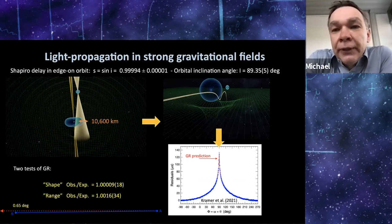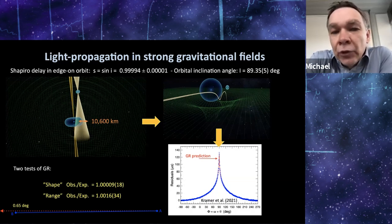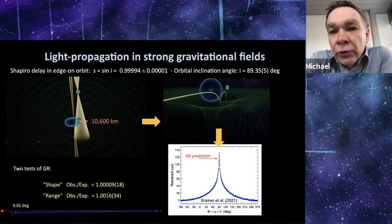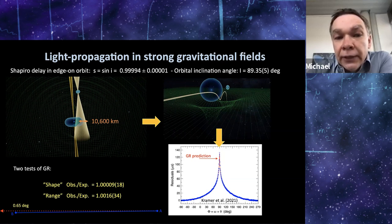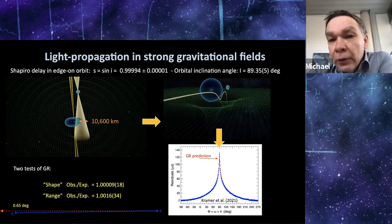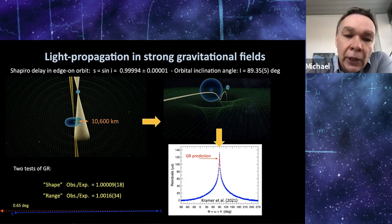We also measure light propagation, something that not many experiments can do in strong field. And here, of course, we make use of the orbital inclination angle being so close to 90 degrees, which means that the light has to pass the other neutron star in just 10,600 kilometer distance. And that leads to delay in the arrival times because it has to propagate through the curved space time. And here again, you see the red curve is prediction by GR and the blue dots are our measurements. And again, that allows us to actually determine the inclination angle of the orbit to that precision. And again, if you compare the observed value with the expectation from GR, again, there's an excellent agreement between the prediction and our experiment.